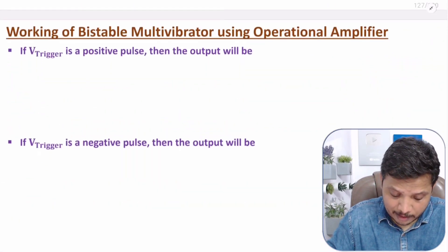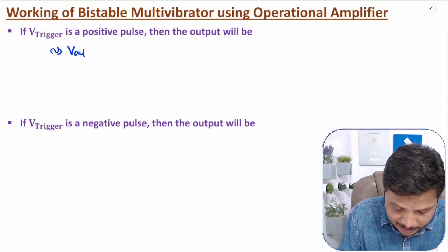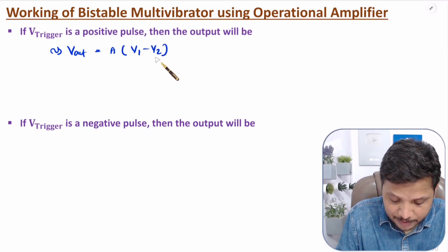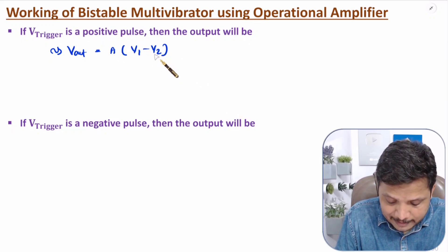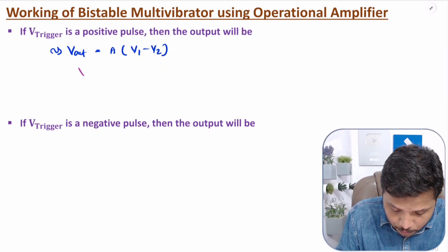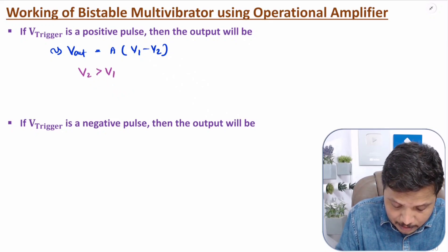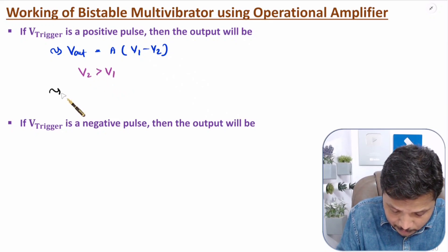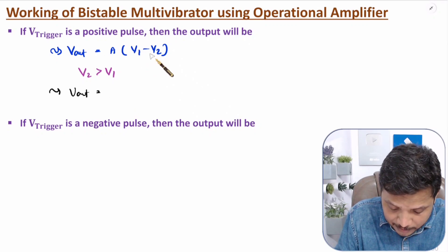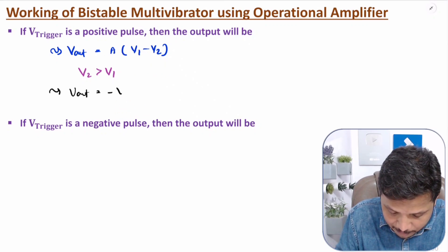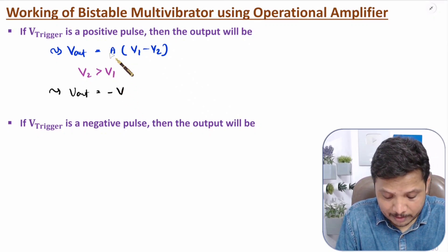If you observe the output equation — that is A into (V1 minus V2) — where V2 is happening based on the pulse: during a positive pulse, V2 is higher compared to V1. So V2 is greater than V1, which means Vout is amplified by this difference. Where V2 is greater than V1, output will be saturated to minus V, since the amplifier gain is very high — in the order of 10 to the power 5 or 10 to the power 6. So if V2 is greater than V1, this Vout will be negative V.